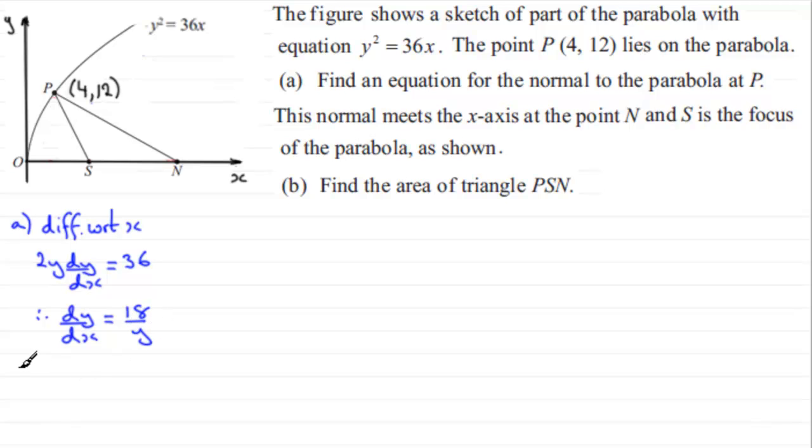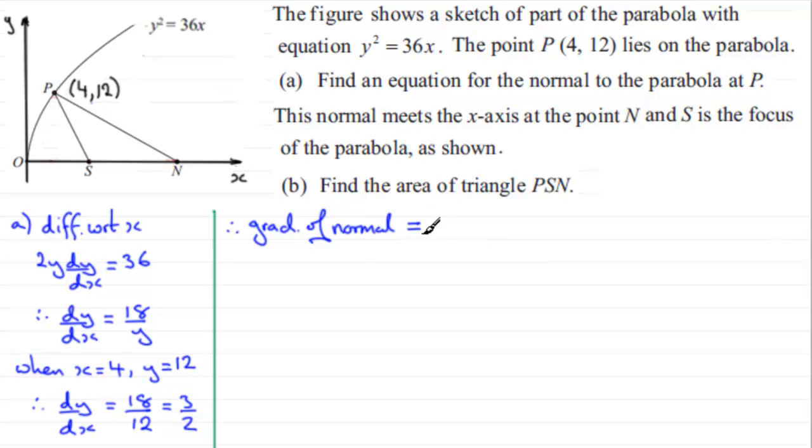And so at P we know that we've got the points x equals 4 and y equals 12. Substitute these in and we've got the gradient then of the tangent. So dy by dx would equal 18 divided by 12, and we can reduce this down to 3 over 2. So we've got the gradient then of our tangent. We now can go on to therefore get the gradient of the normal. We just put for short grad of normal at P, and that's going to be the negative reciprocal of this, that's minus 2 thirds.